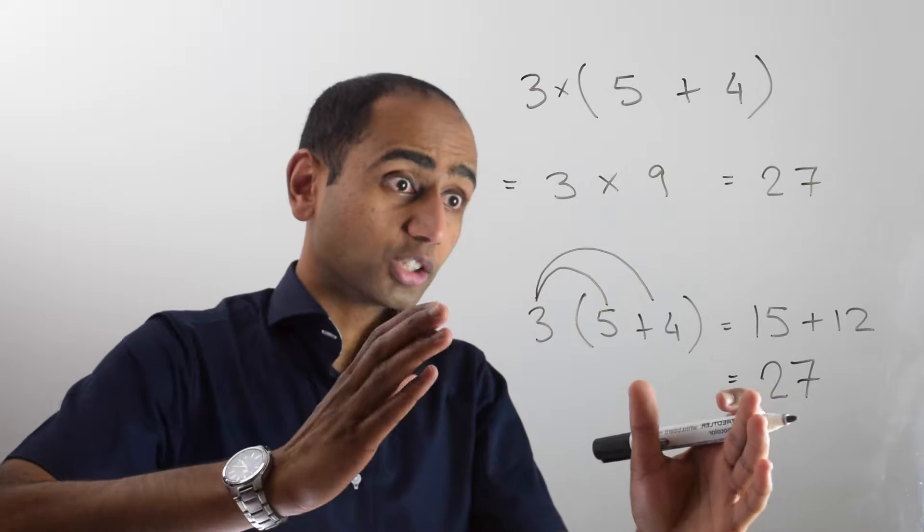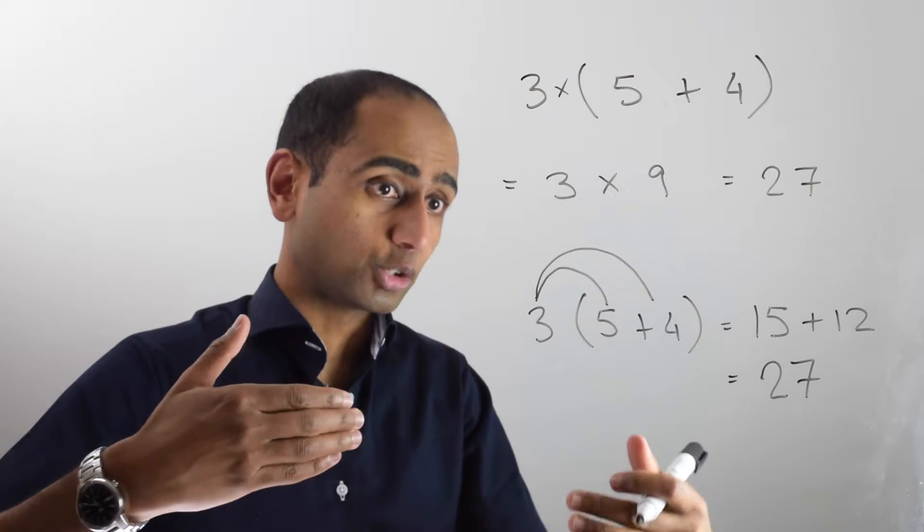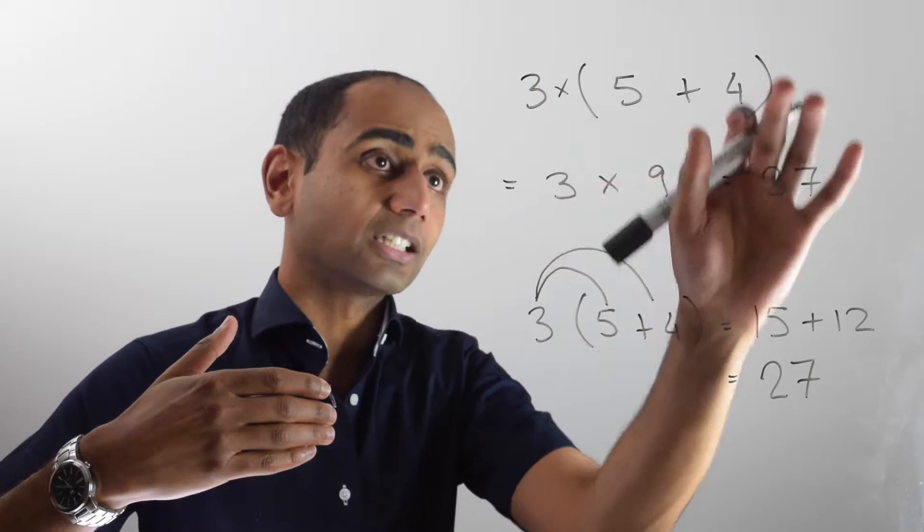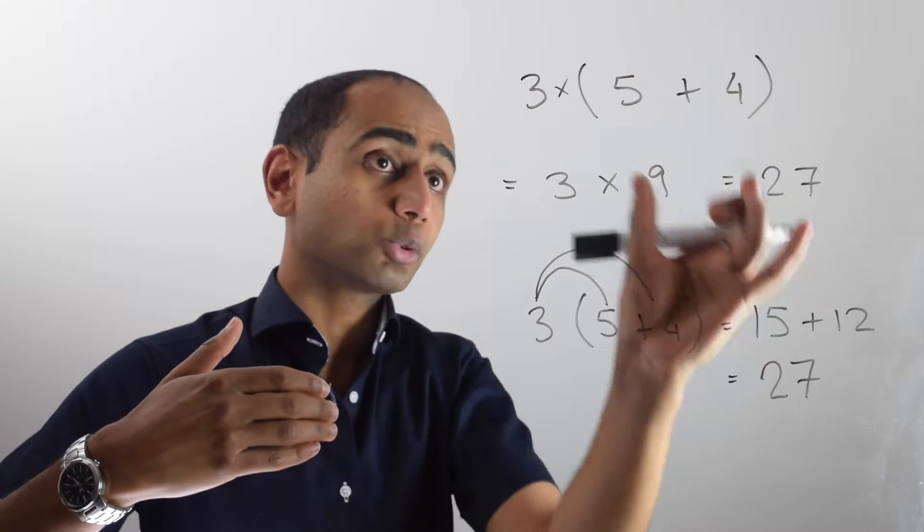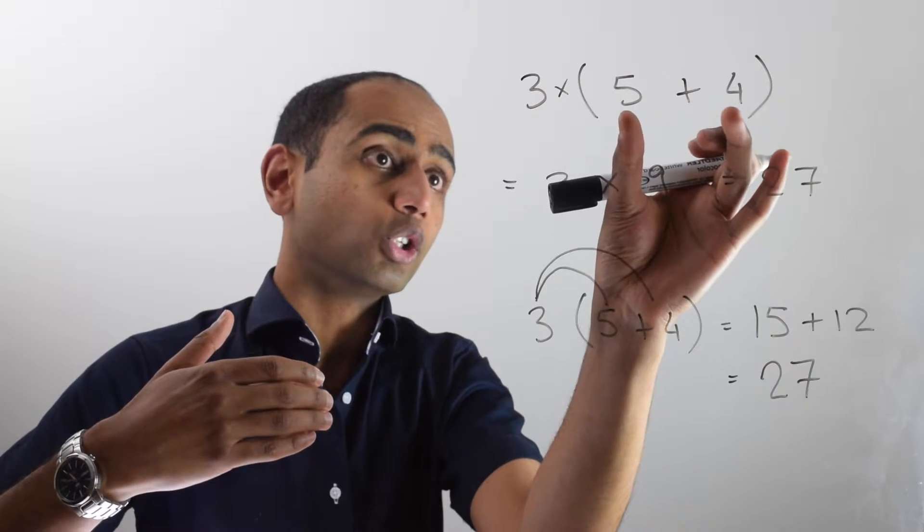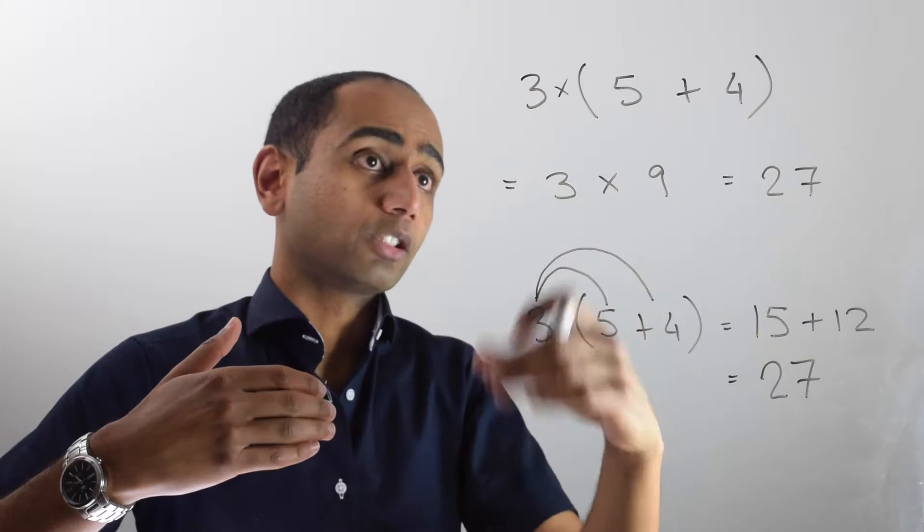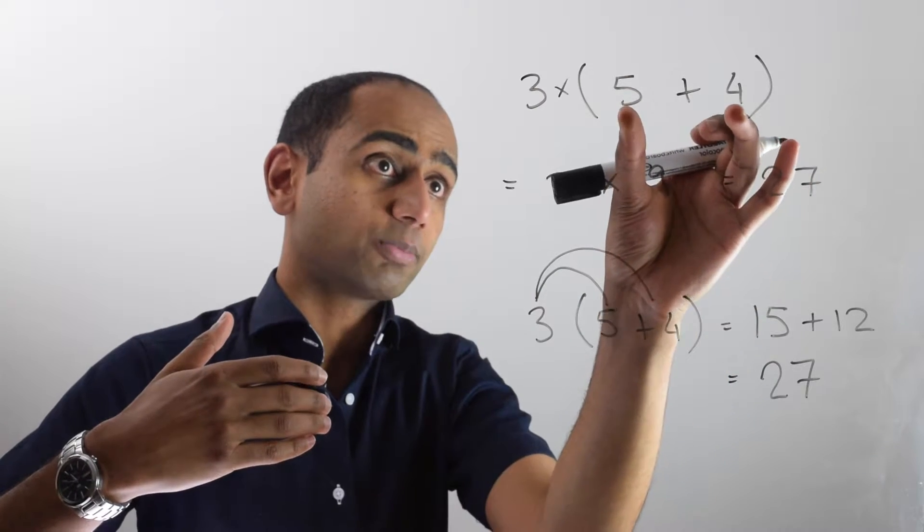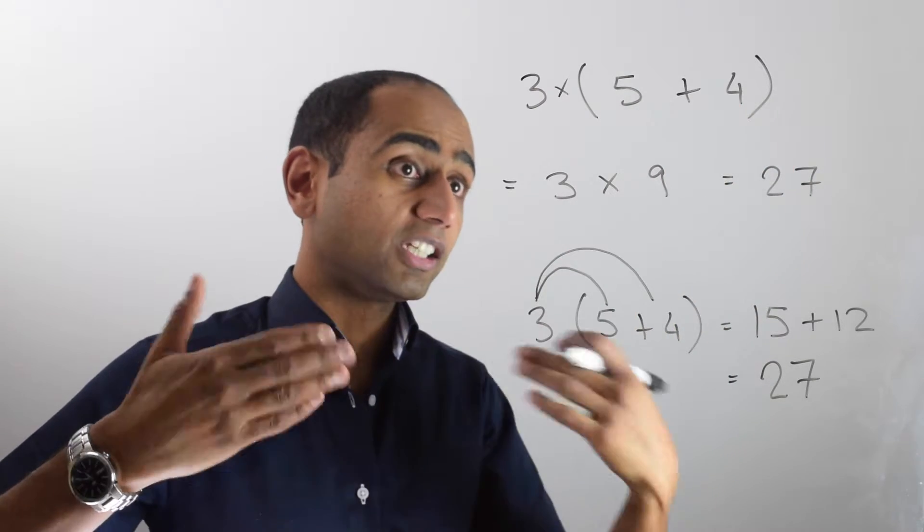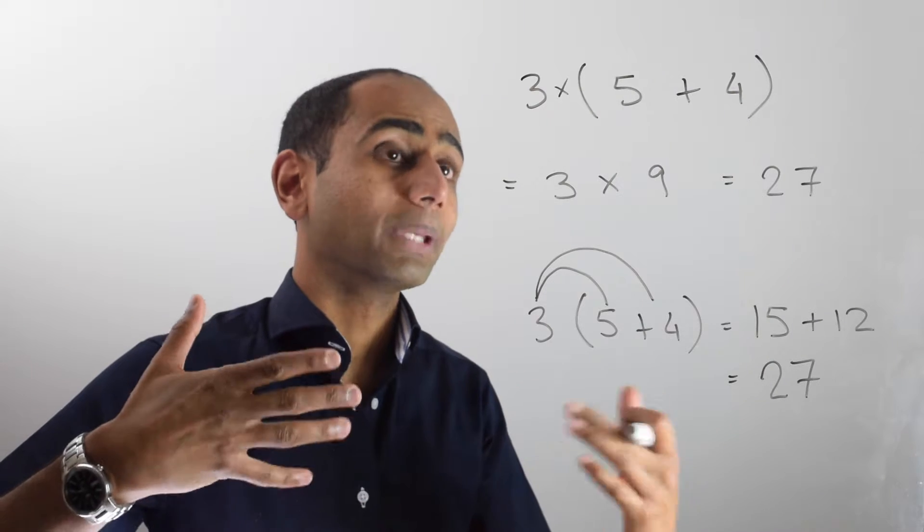Now this is going to be a useful method to use when it comes to algebra, because if we've got a letter inside our bracket sometimes we can't simplify what we've got inside the bracket. So in this question I could simplify 5 + 4 into 9, but in the examples you're about to see we won't be able to do that.